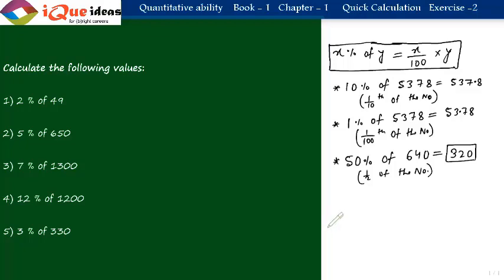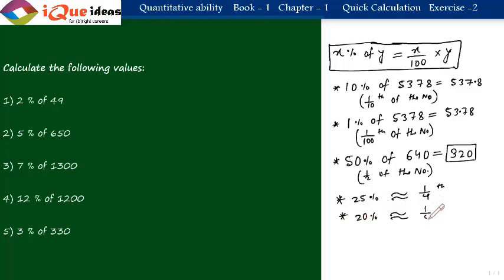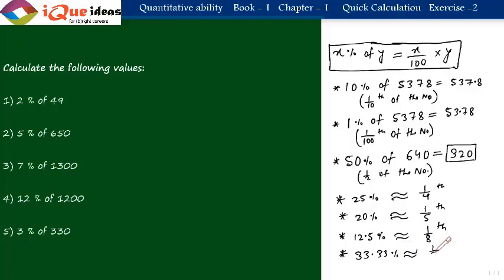If we have 25 percent, it is equivalent to one-fourth of the number. 20 percent is one-fifth of the number. 12.5 percent is equivalent to one-eighth of the number. 33.33 percent is equivalent to one-third of the number. You can apply these ready-reckoner values both ways.